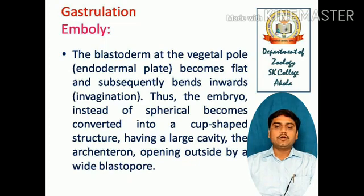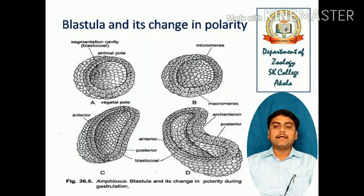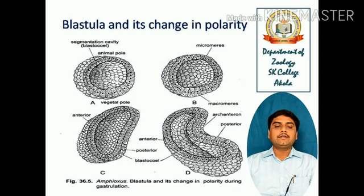Thus the embryo, instead of spherical, becomes converted into a cup-shaped structure having a large cavity — the archenteron — which opens outside by the wide blastopore. The cup has double walls, an external and internal layer, both continuous with each other over the rim of the cup-shaped embryo. In this embryo, the prospective mesoderm lies in the ventral lip of the blastopore and the prospective notochord lies in the dorsal lip of the blastopore.